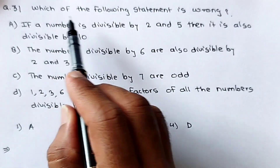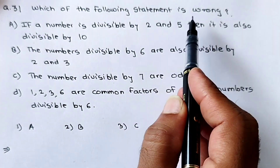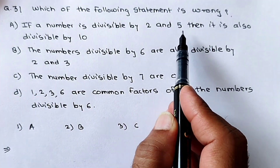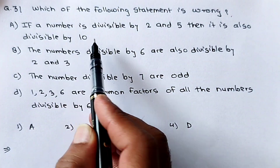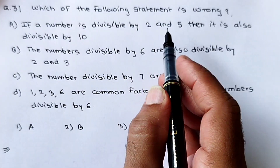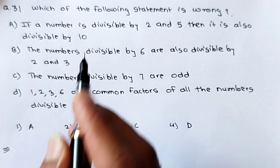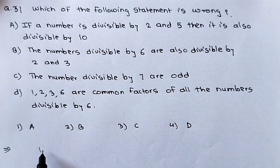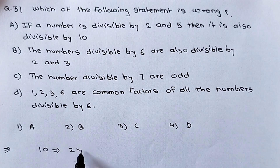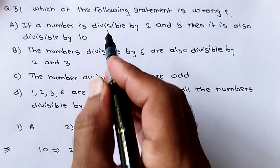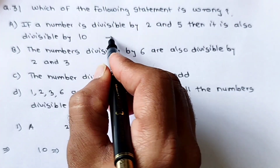See question number 31: which of the following statements is wrong? The first statement is: if a number is divisible by 2 and 5, then it is also divisible by 10. This is very clear — divisible by 10 means the factors of 10 are 2 × 5. So if a number is divisible by 2 and 5, then it is obviously divisible by 10. This statement is true.